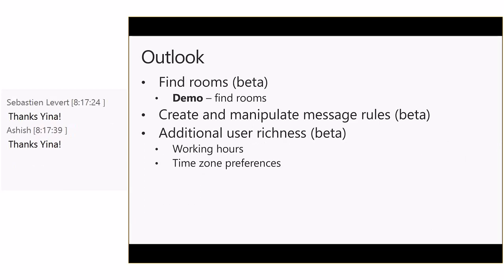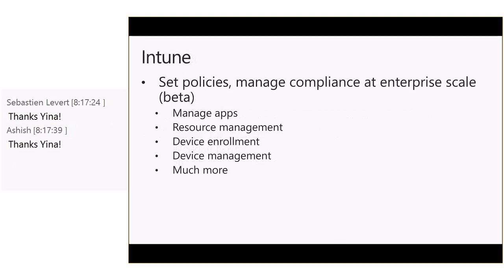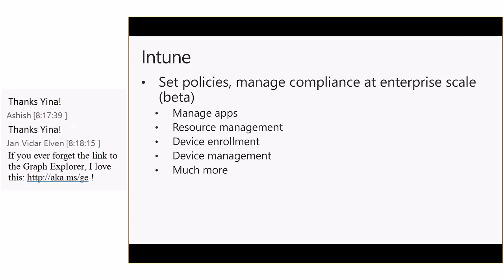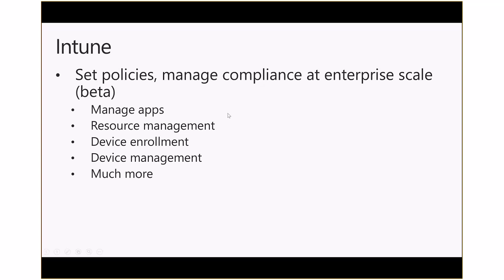Next is the Intune functionality. We have an updated beta for the Intune API, which is a large API that lets you do a lot around setting policies for resources and devices to enforce compliance in your organization. For instance, you can manage the applications your users have access to, bring in custom applications for iOS VPP, track installs and availability, and enroll and manage company-owned devices. You can set policies for Windows 10 around password complexity, password expiration, and VPN rules. Documentation for all these resources and APIs is available on graph.microsoft.com.